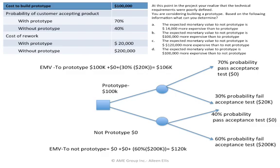The EMV to prototype is $106,000. The EMV to not prototype is $120,000. When I go back to the question and look at the answers, answer A is the best answer. It will cost $120,000 from an expected monetary value standpoint to not prototype — $14,000 more than the expected monetary value to prototype.